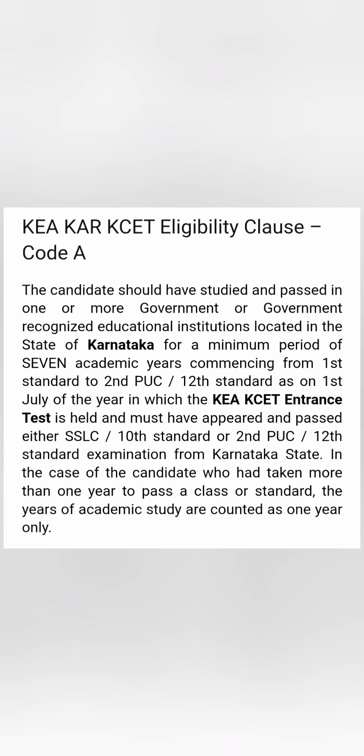Code A is basically that you have passed seven continuous academic years from the state of Karnataka itself. That means you have studied continuously seven years including class 10th or class 12th from Karnataka. For example, any student who has come to Karnataka after studying class 5 — from class 6 onwards in Karnataka — so class 6 to 12, that is total 7 years, and is eligible for Code A.